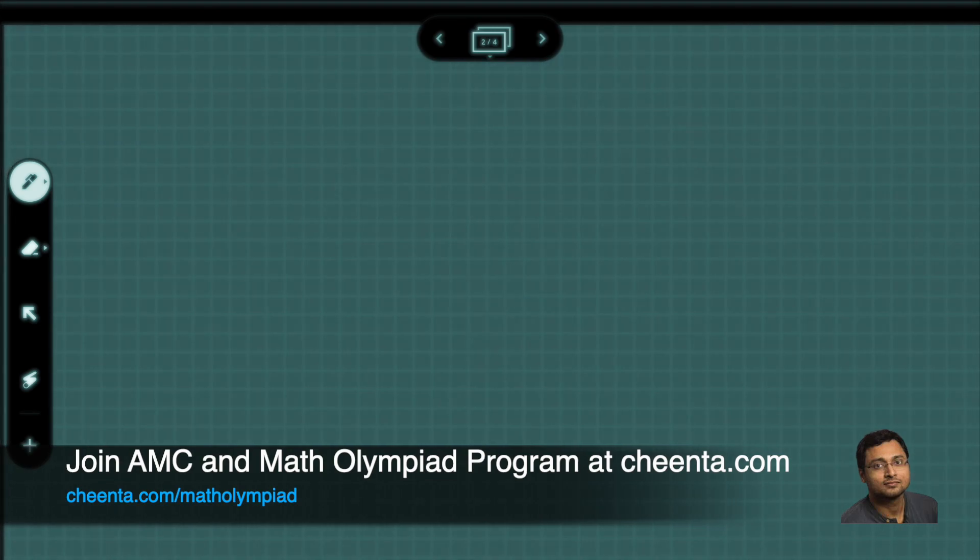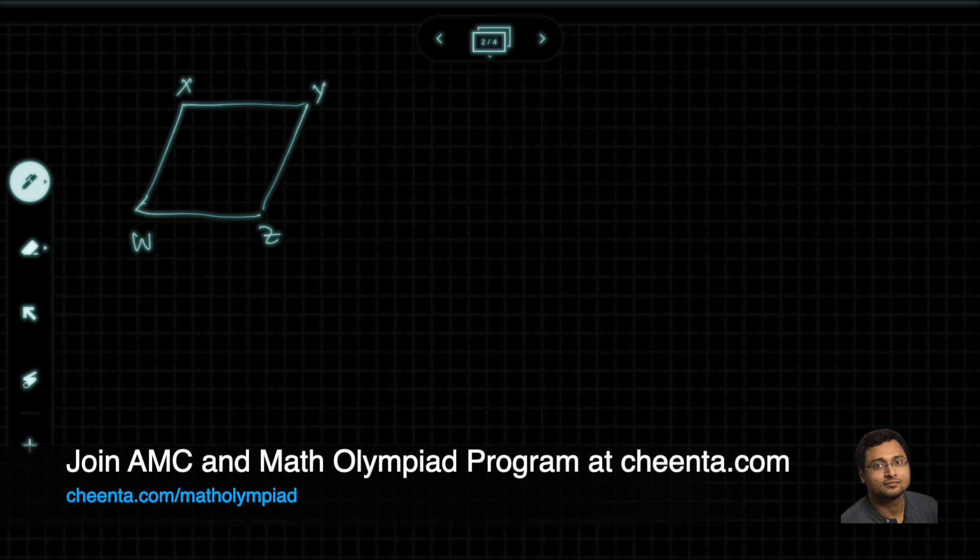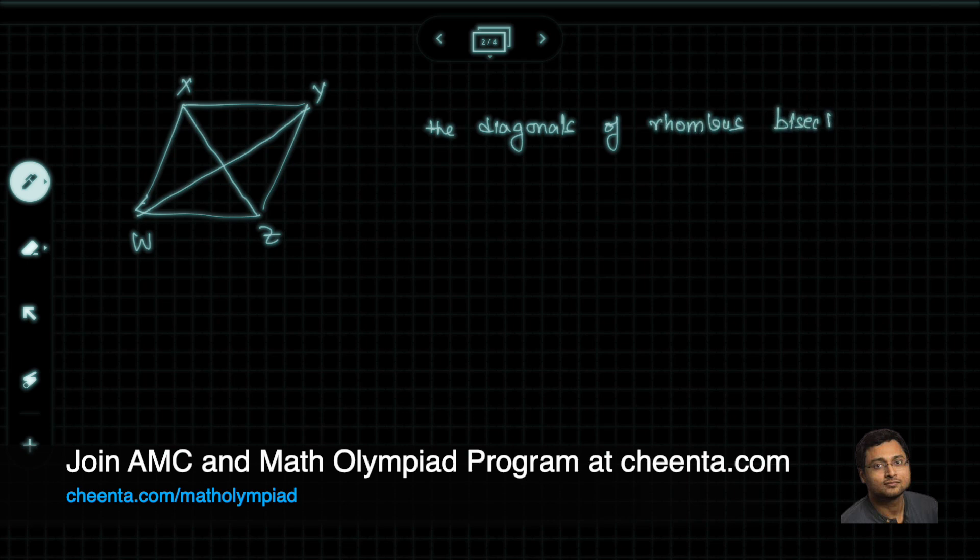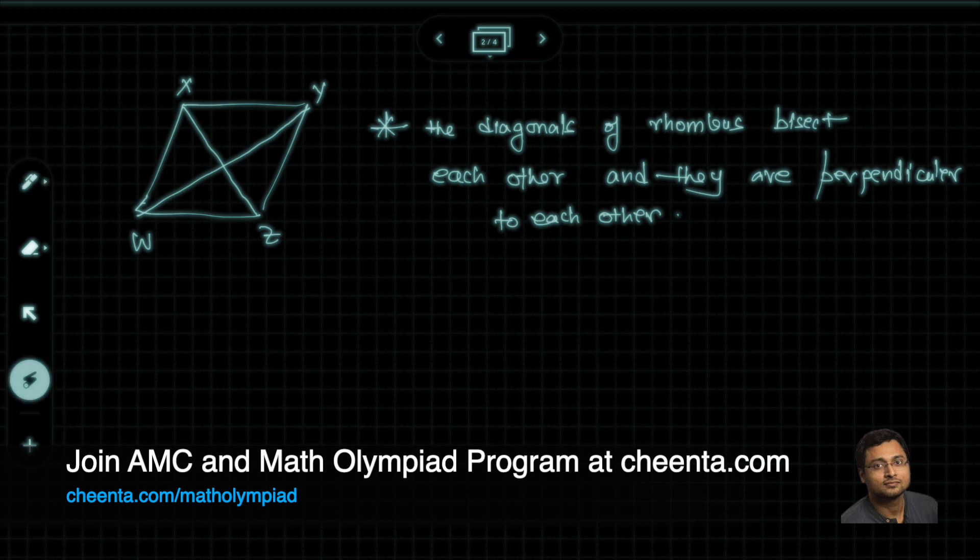Okay, so there is a formula for area of a rhombus. I'll go to our next slide and show it to you. So if you have a rhombus like this, a rhombus say XYZW, all four sides are equal. Now the first thing that you have to know is that the diagonals of a rhombus bisect each other and they are perpendicular to each other. So can you give me an argument why this is true? Why can we say that these two diagonals bisect each other and this angle is 90 degrees?